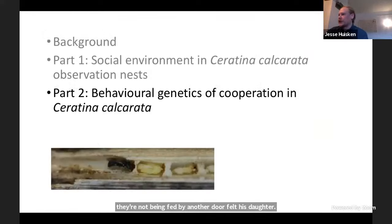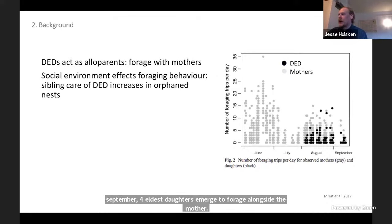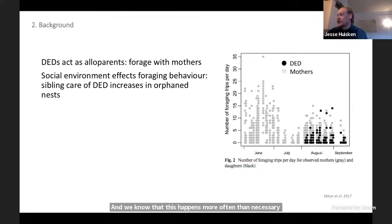For the second section of my research, I looked at behavioral genetics of foraging preparation in Ceratina calcarata in the wild. We know from previous research from Michael McCaw that dwarf eldest daughters act as alloparents—they actually forage with the mothers. During the early period in June and July, mothers are provisioning their nests. But then in August and September, dwarf eldest daughters emerge to forage alongside the mother. This happens more often in nests that have been orphaned, so social environment is important to this foraging behavior.